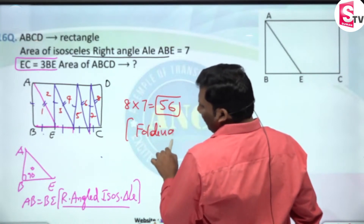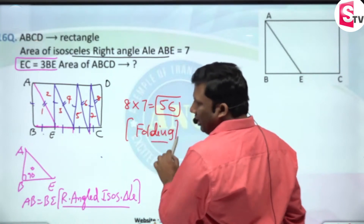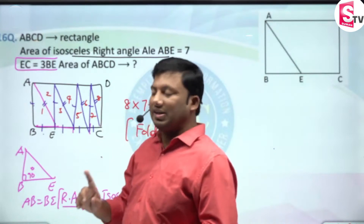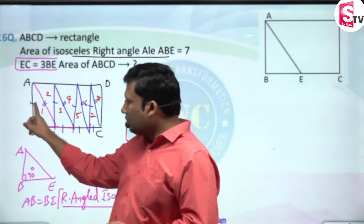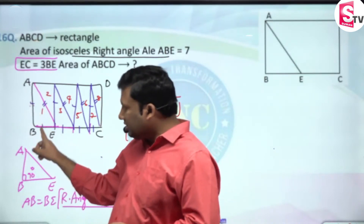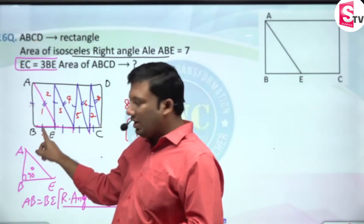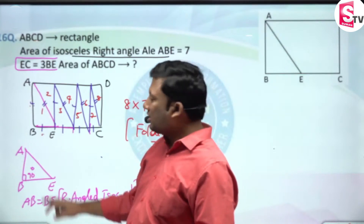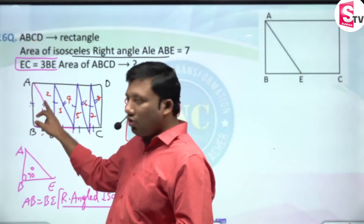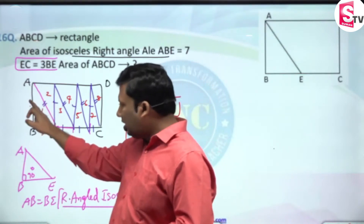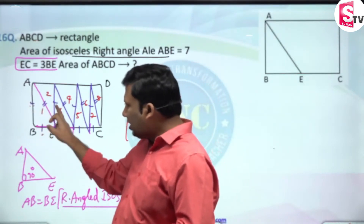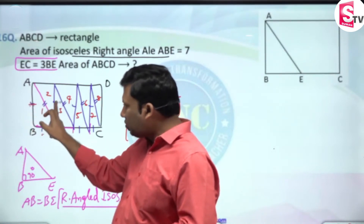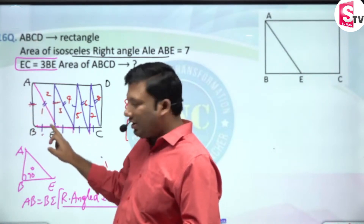If I fold the figure, ABE is an isosceles right-angled triangle. If this leg is x, the other leg is also x. The hypotenuse becomes the square root of x² + x², which is root 2·x. Again this will become x because these two are the same height.